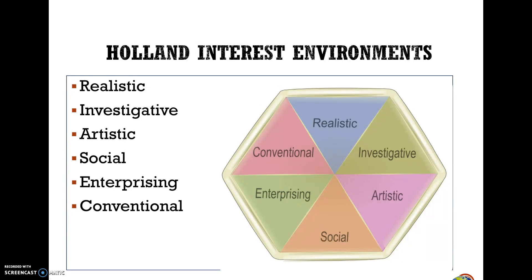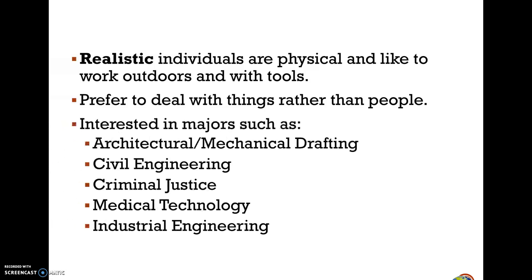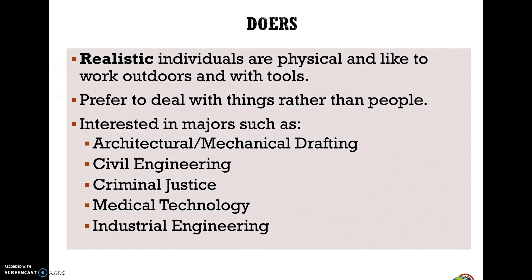Now we'll look at Holland Interest Environments — the Holland Interest Code. I have a link in Week 3 resources where you can do a Holland code yourself. I believe I also have a True Colors assessment there. They'll give you three letters that usually correlate with one another. The six interest environments are: Realistic, Investigative, Artistic, Social, Enterprising, and Conventional. The Realistic type — referred to as the Doers — are physically active and like to work outdoors and with tools. They prefer to deal with things rather than people. Majors include Architecture, Mechanics, Drafting, Civil Engineering, Criminal Justice, Medical Technology, and Industrial Engineering.